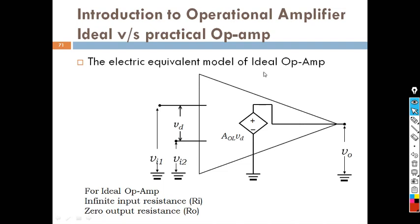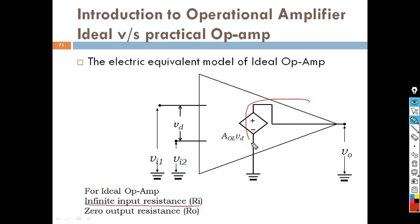Now, the electrical equivalent model for the ideal operational amplifier. In the ideal operational amplifier there is no connection between the two terminals, meaning input impedance is very high — in fact, infinite. You can also see that the output is shorted, meaning output impedance is zero. That is the difference between a practical and ideal operational amplifier.